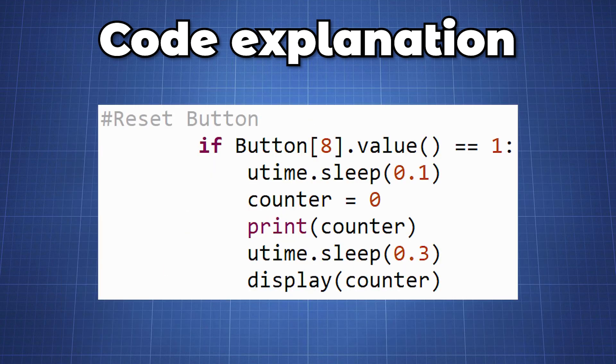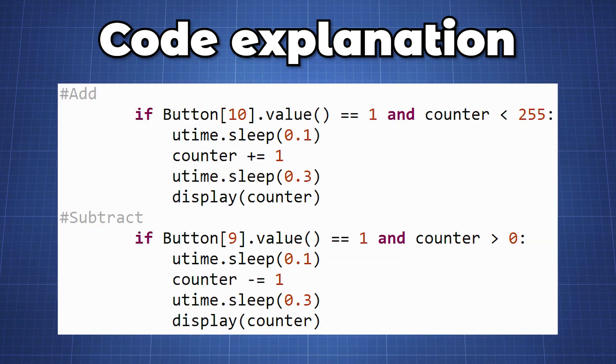We then check the other three inputs which will be our reset button to set our counter to 0 and call the display function. The other two buttons will add 1 to the counter or subtract 1 from the counter. This will allow you to adjust the counter between the values of 0 to 255.